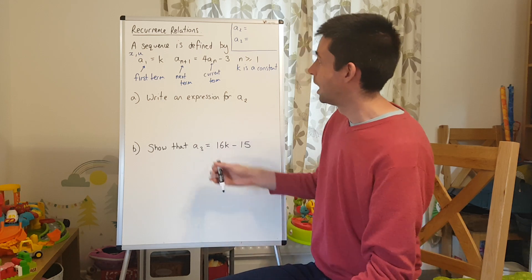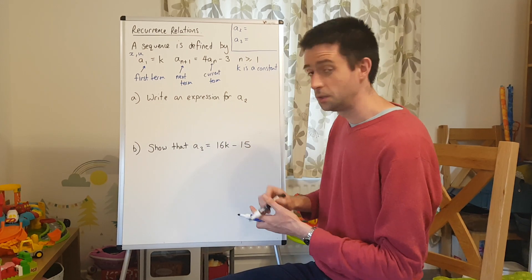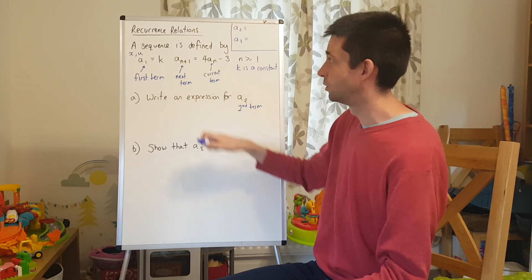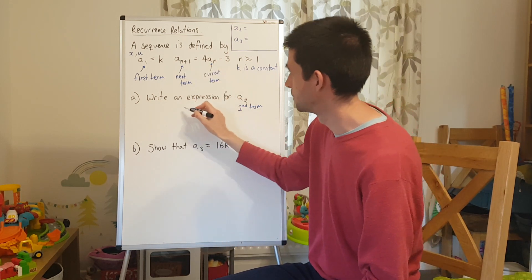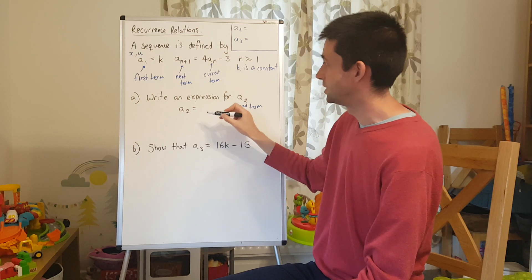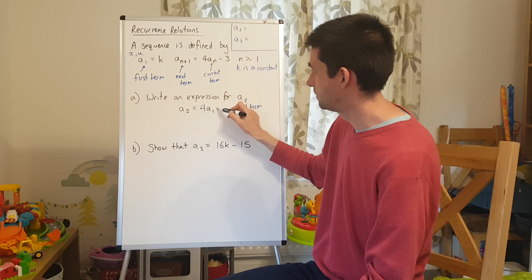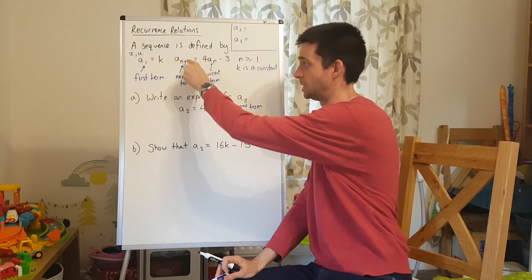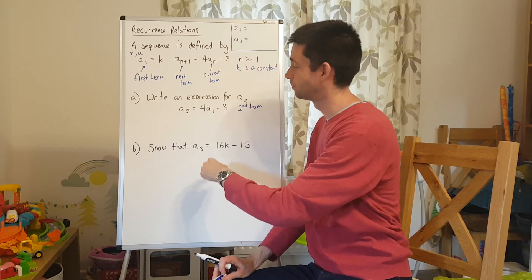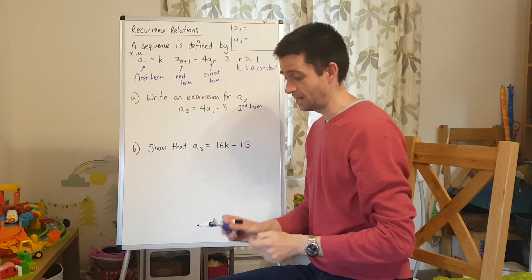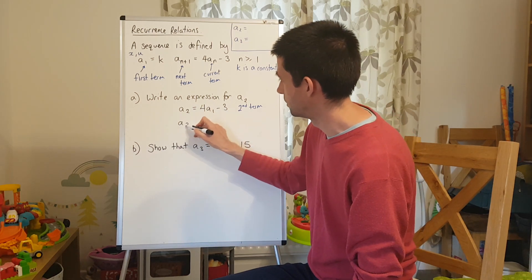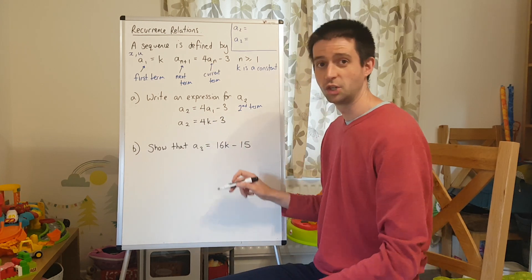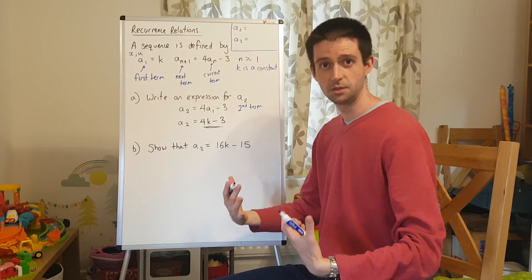So, how we would use this to write an expression for a2 — which is going to be the second term. I would use this formula, and say: a_{n+1} is going to be a2, and to get that I'm going to need to do 4 lots of a1, then take away 3. So a1, the first term, is my current term; the next term is the second term. And I'm given that a1, the first term, is k. So what I do is replace that a1 with k, and that is my expression for a2 — the second term of this recursive sequence. I'm going to jot that up here because I'll need it later.